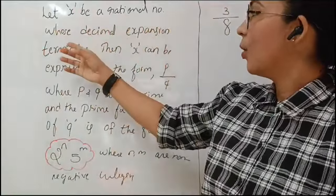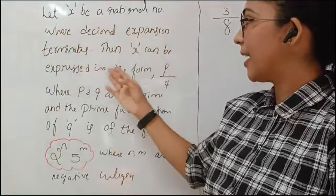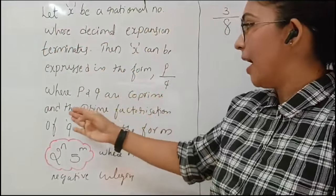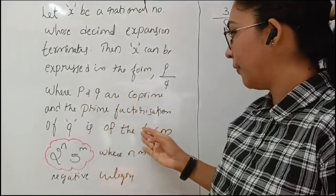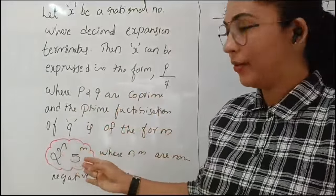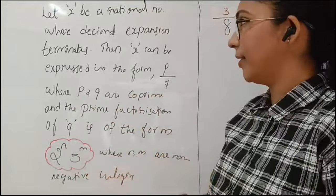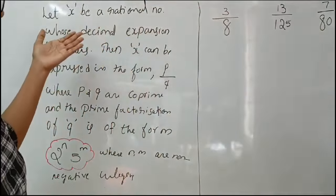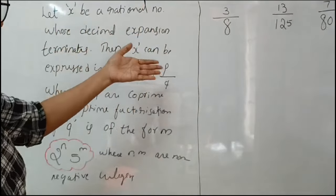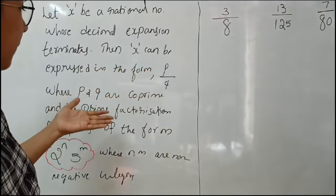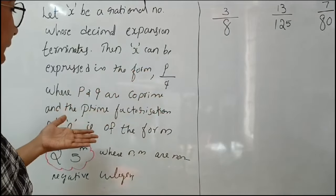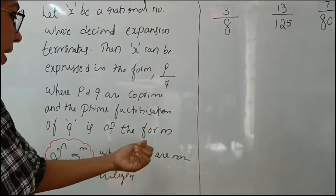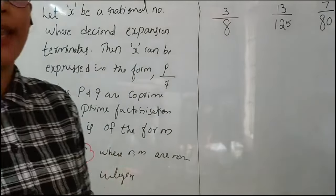Let X be a rational number whose decimal expansion terminates. Then X can be expressed in the form P by Q, where P and Q are co-prime and the prime factorization of Q is of the form 2 raised to N times 5 raised to M, where N and M are non-negative integers.